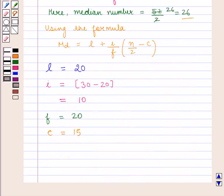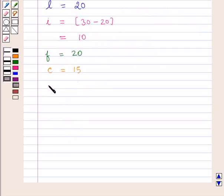Now, substituting all these values in the above formula, we get Md = L, that is 20, plus i upon f, that is 10 by 20, into n by 2 minus c, that is 26 minus 15.